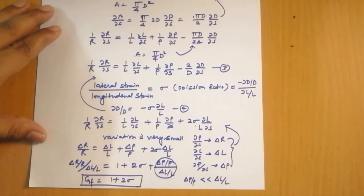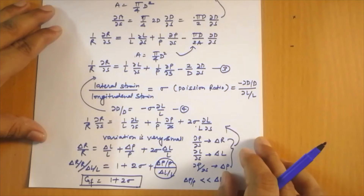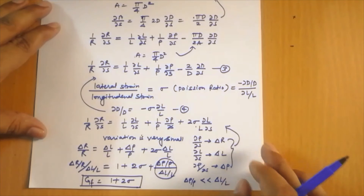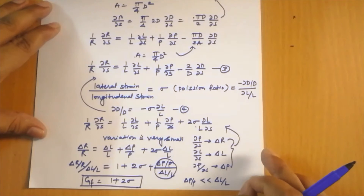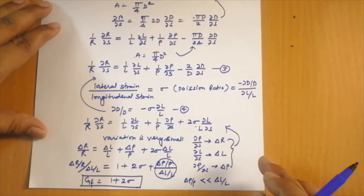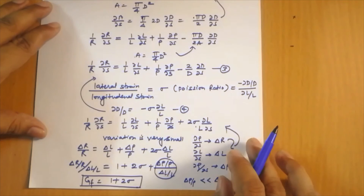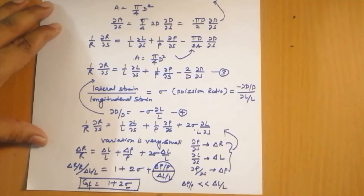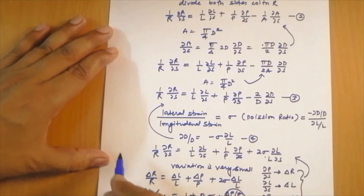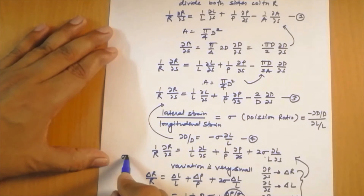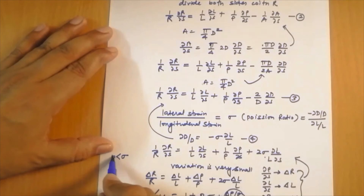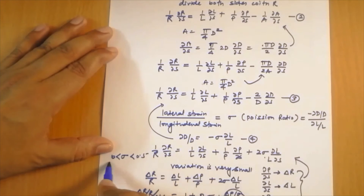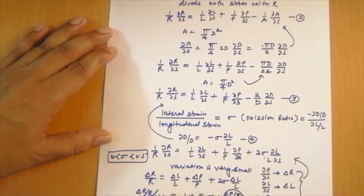Here sigma is Poisson's ratio. For a conductor wire, the value of the Poisson factor is 0.3, giving a gauge factor value of 1.6. For metals, sigma lies between 0 and 0.5.